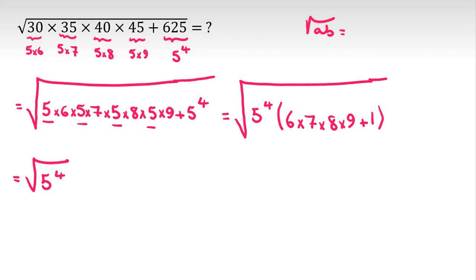Square root of AB, which A and B are at least 0, equals square root of A times square root of B. It will be times square root of 6 times 7 times 8 times 9 plus 1.